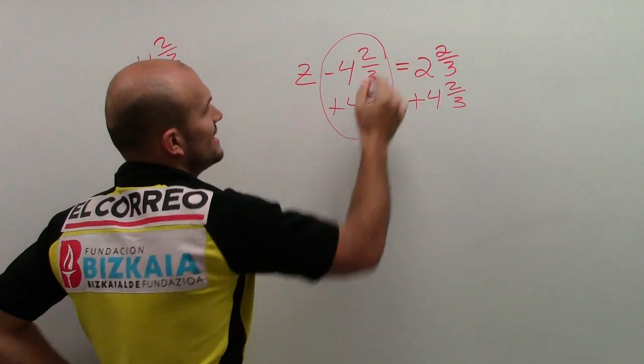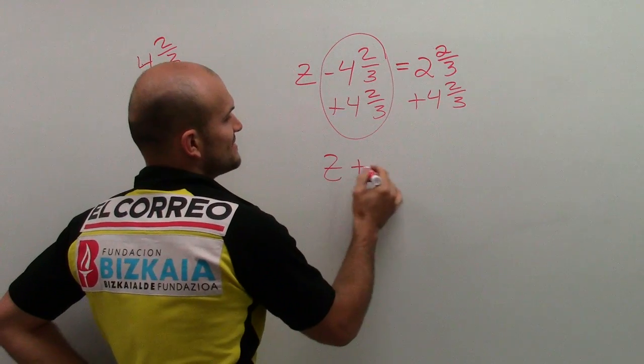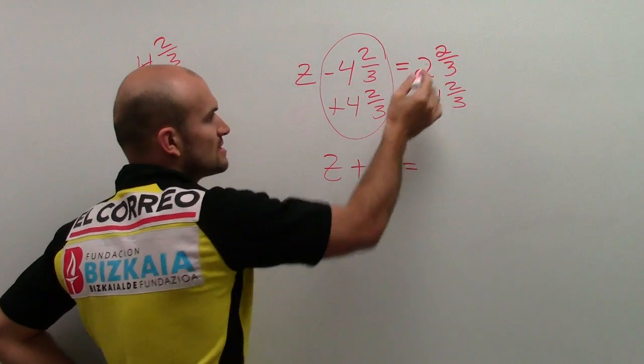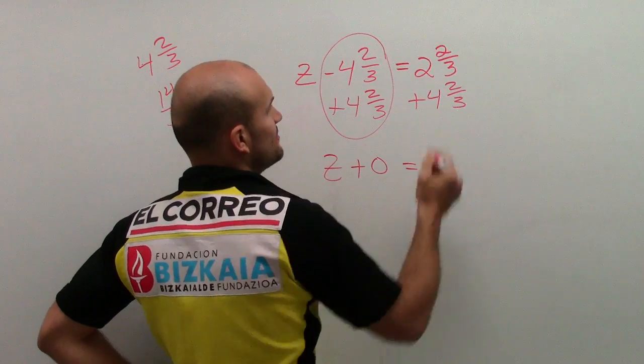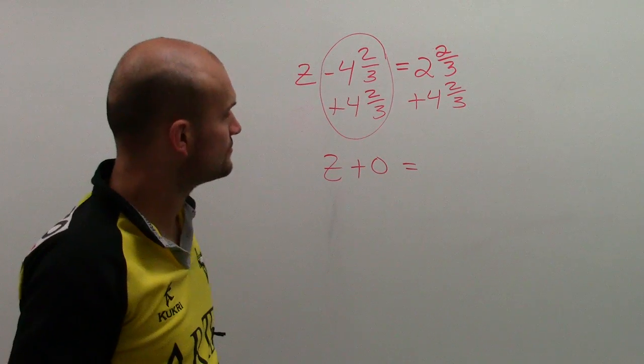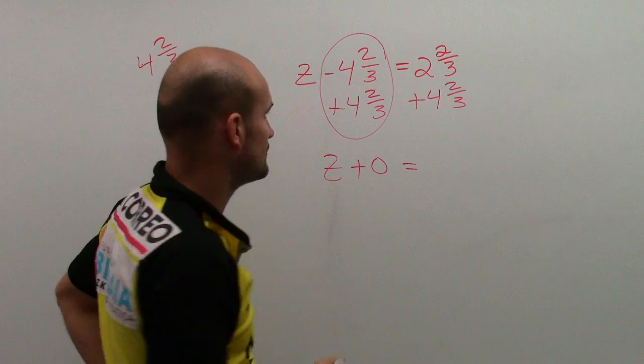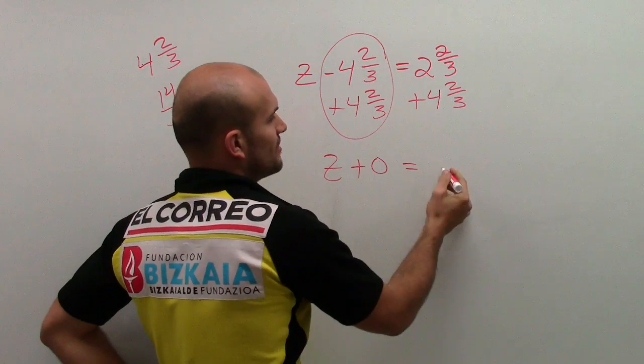Now, what I notice is this goes to 0. So I have z plus 0 equals—when you're adding mixed numbers, you can simply just add up your whole numbers.